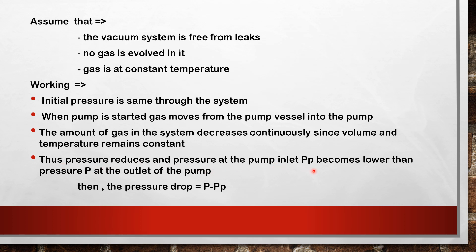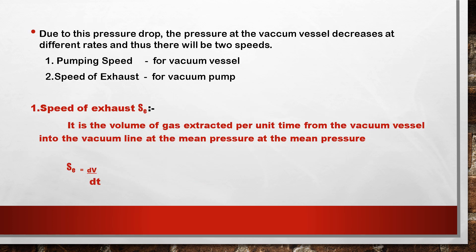The pressure at the pump inlet is p_p, which is lower than the pressure p at the outlet of the pump. The pressure drop is p minus p_p. Due to this pressure drop, the pressure at the vacuum vessel decreases at different rates, giving rise to two speeds: pumping speed (for the vacuum vessel) and speed of exhaust (for the vacuum pump).